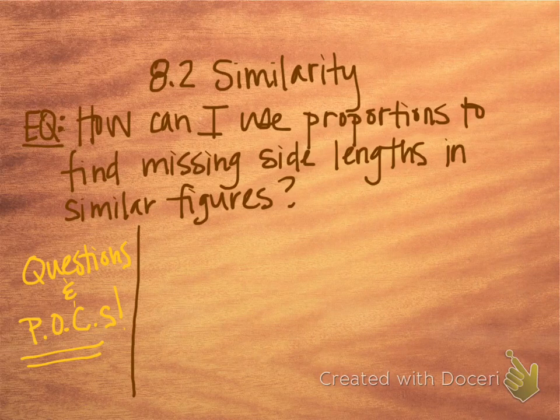Hi kids! These sets of notes will cover sections 8.2 and 8.3. Section 8.2 is over similarity. The essential question is: how can I use proportions to find missing side lengths in similar figures?